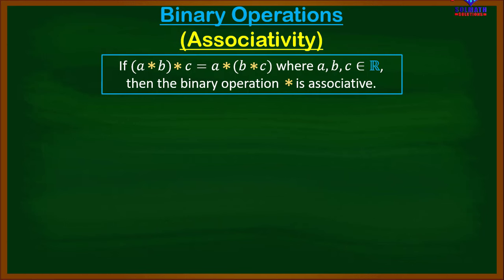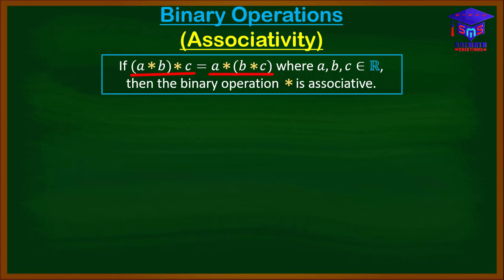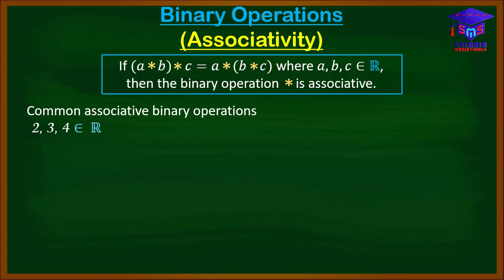Today we are going to look at the property of associativity and a binary operation. If A★B★C is equal to A★B★C, where A, B, and C are all real numbers, then the binary operation star is associative. So for any closed binary operation, the binary operation is said to be associative if A★(B★C) is equal to (A★B)★C.